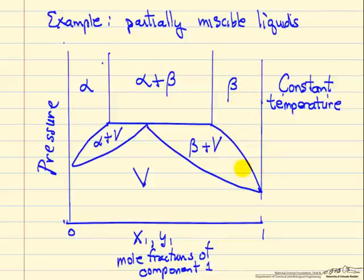Beta is enriched in component one, and alpha is enriched in component two. Then we have alpha and vapor, so it's liquid phase in equilibrium with vapor. This is beta phase in equilibrium with vapor. And then alpha plus beta means we have two phases in the liquid that don't mix with each other, but each phase has both components.